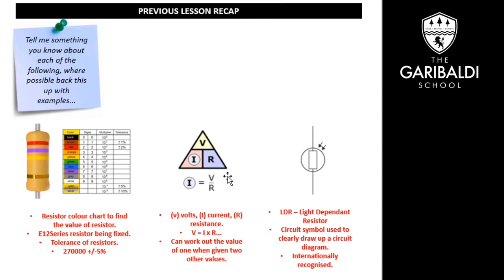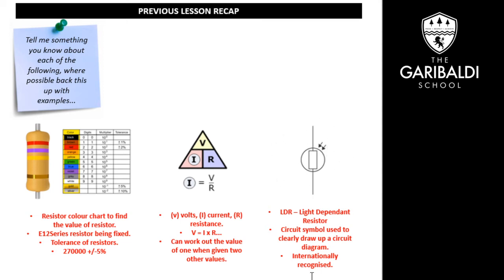To work out the current, we cover up the I, which is the current, and to work that out it is simply the voltage divided by the resistance — they are all linked together, and that was covered in the last lecture. So that's how to work that out. We've also got an LDR, which I mentioned a moment ago as a circuit symbol, and that gives us a little bit more information.